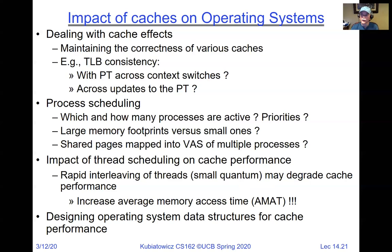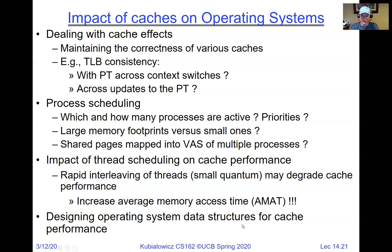False sharing occurs when two small data structures sit on the same cache line and are used by different processors. Even if those processors aren't sharing data, the cache coherence protocol bounces the cache line back and forth between them. This is false sharing — the coherence system thinks it's shared data, but it isn't, and performance degrades. You must be careful about how data structures align on cache lines to avoid this.